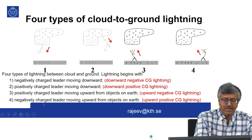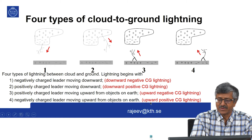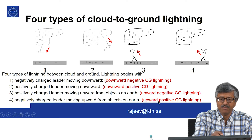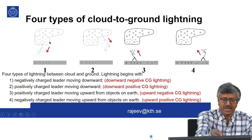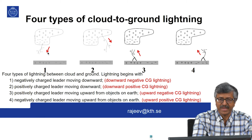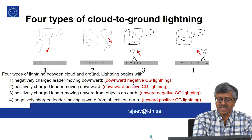A negatively charged leader moving upward from objects on earth results in upward positive cloud-to-ground lightning. Of all lightning types, the most important for us is negative lightning. Almost 90 percent of the cloud-to-ground lightning we see is negative CG lightning.